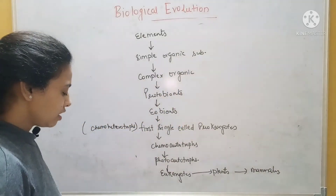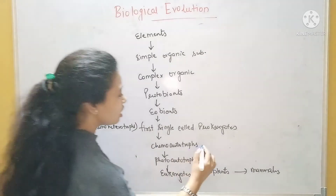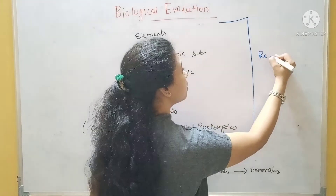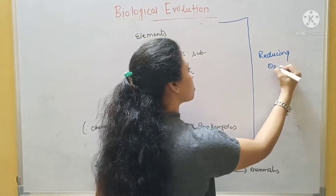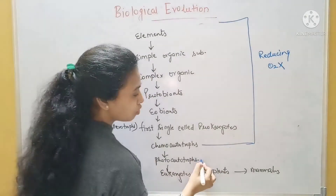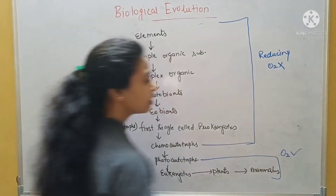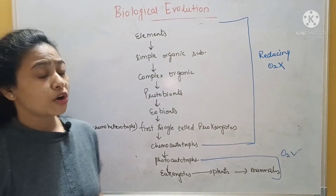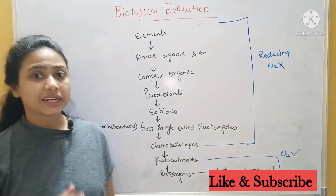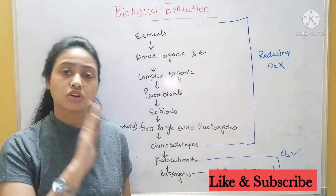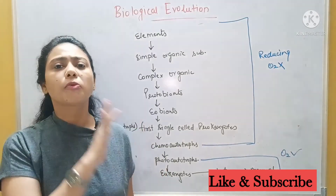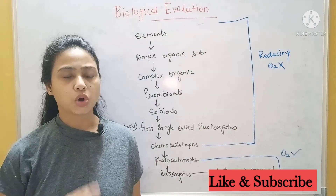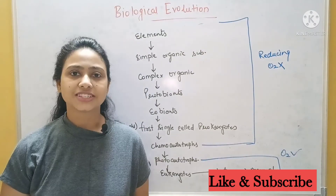One important note: initially the environment was reducing — oxygen was absent. After photo autotrophs, oxygen started evolving. That is all about biological evolution. I hope it is clear. For better understanding, please go through the chemical evolution and the introductory part first, so the entire series will be clear. If you have any doubts, please put your query in the comment box. Thank you so much for watching this video.